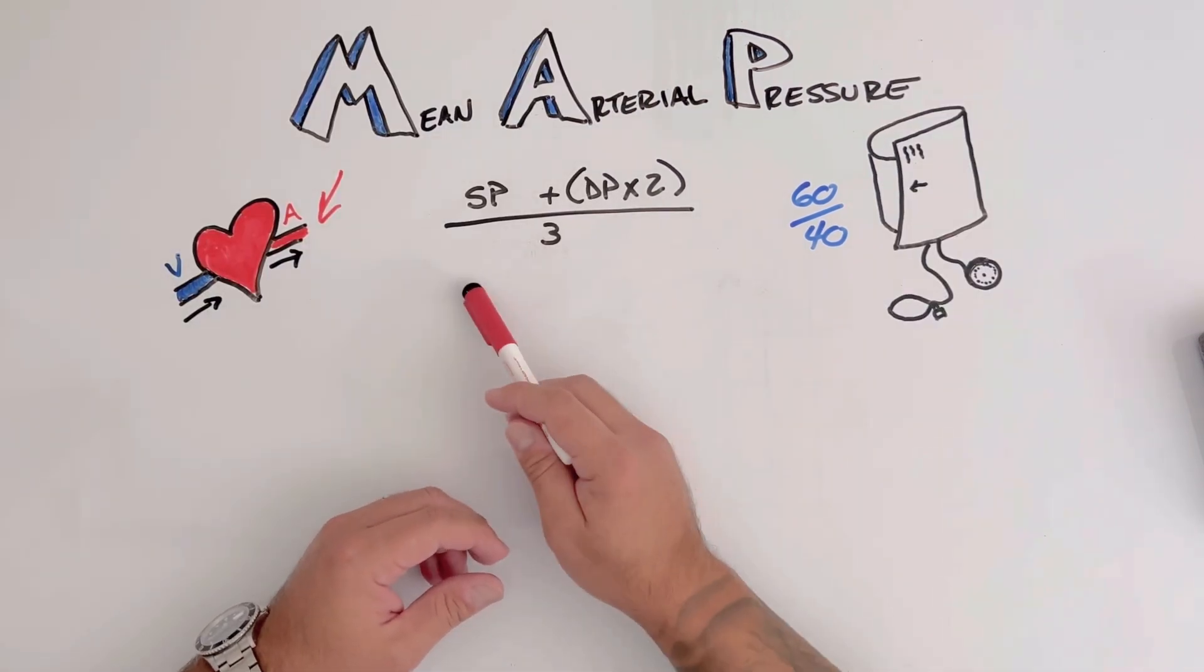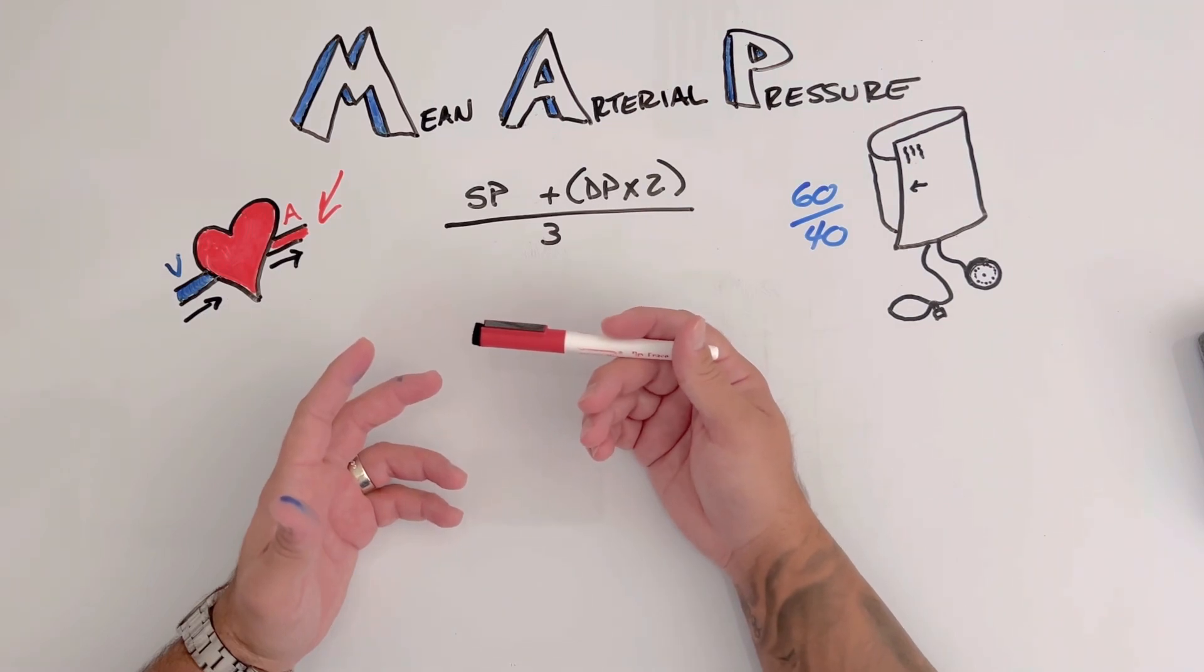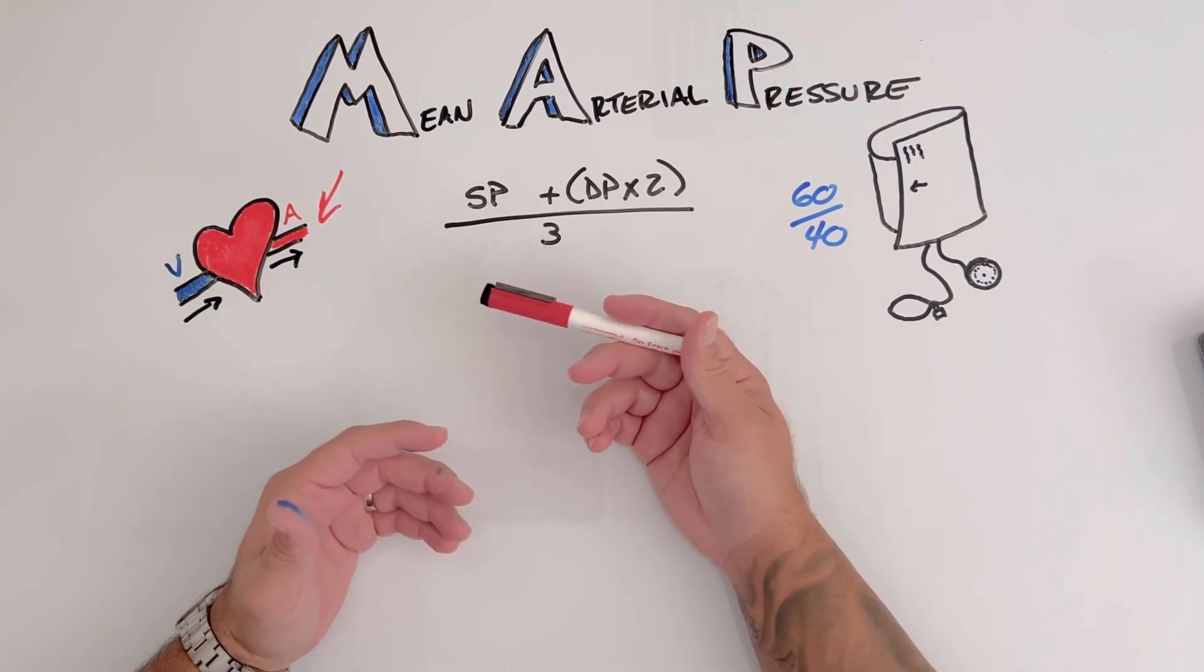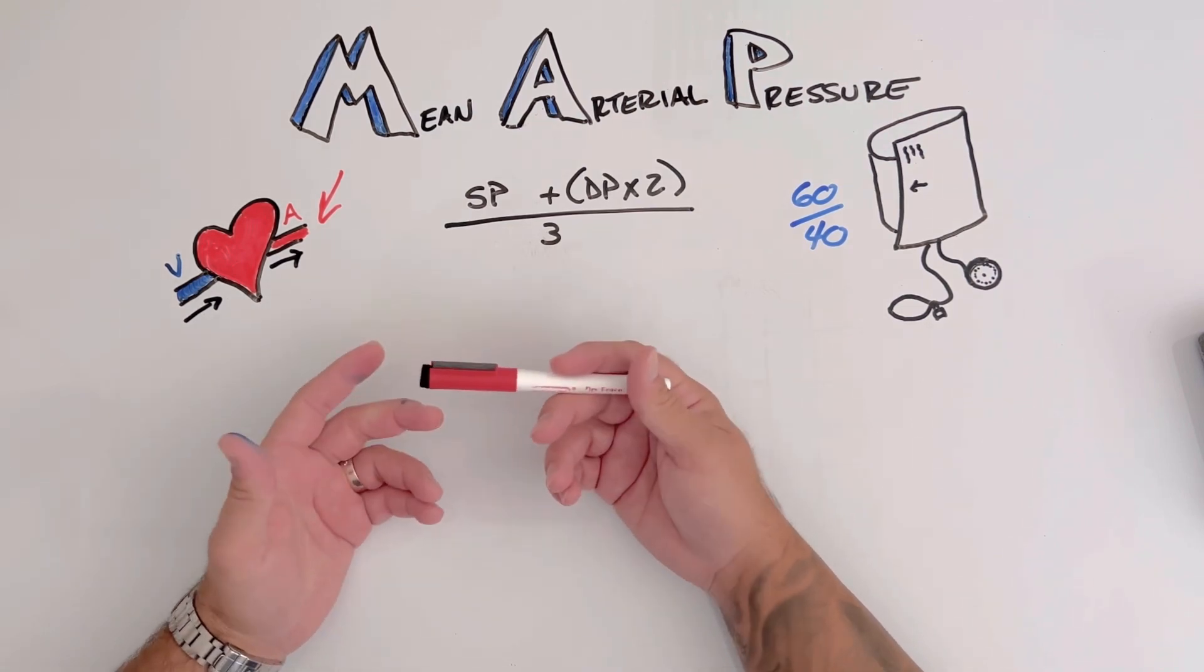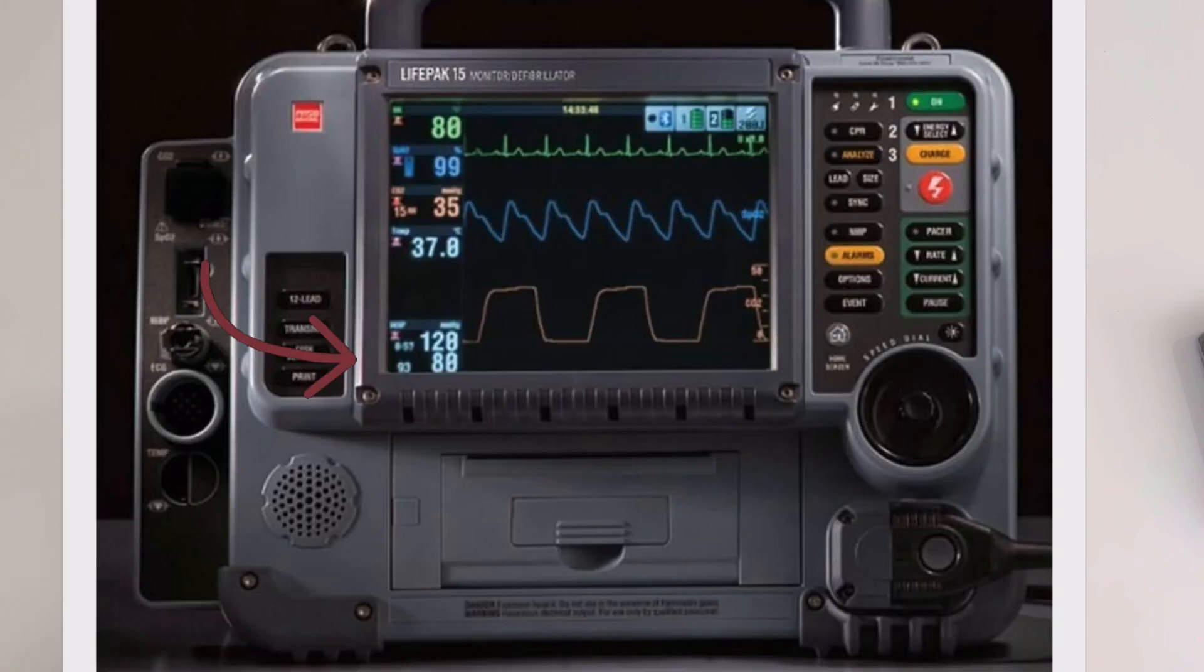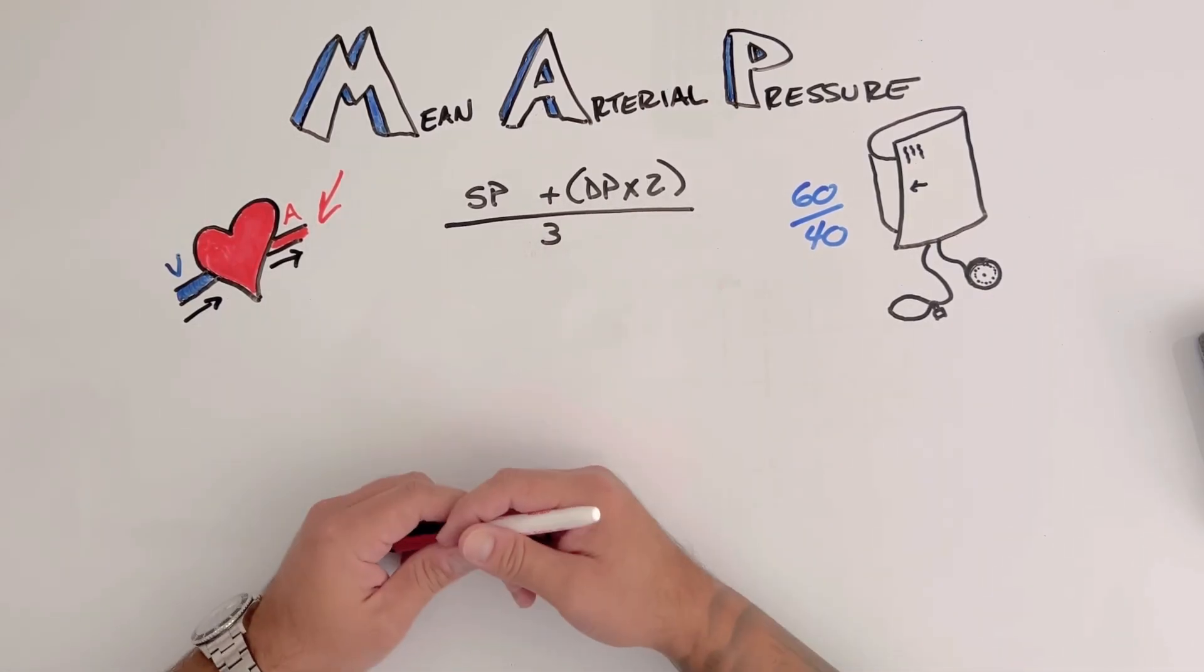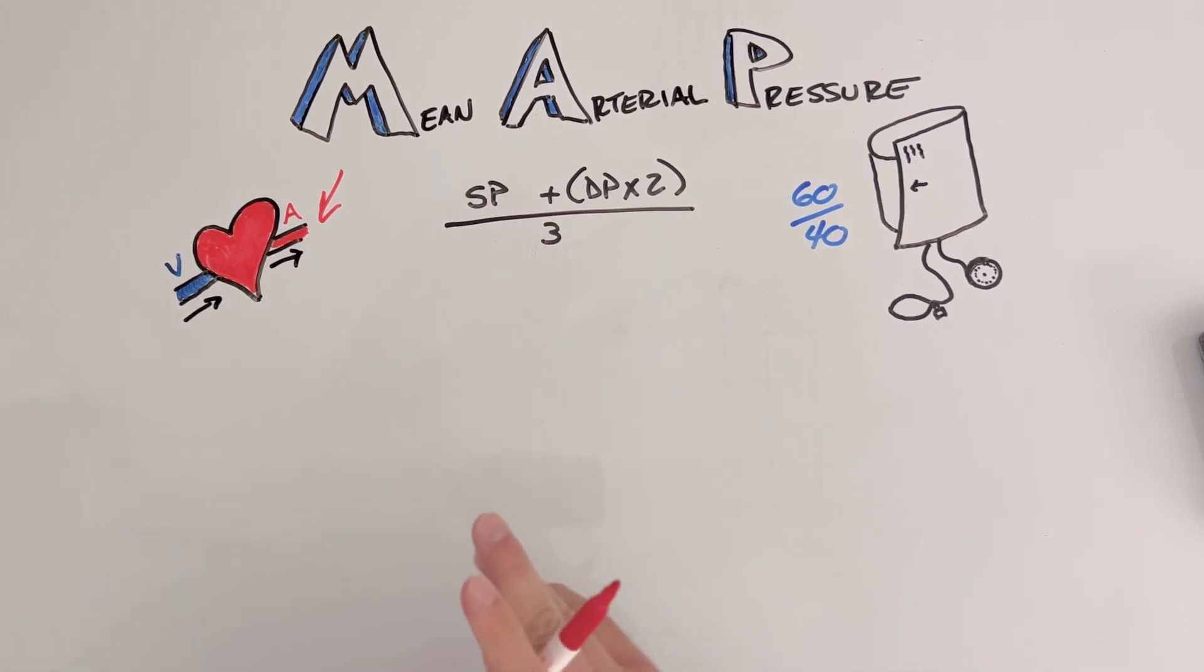So let's look at the simple equation. There are a bunch of different equations. I find that this is the simplest to do the MAP very quickly. Also, our monitors may have an estimate of MAP on them underneath your BP score, but we can do it ourselves and do the MAP.